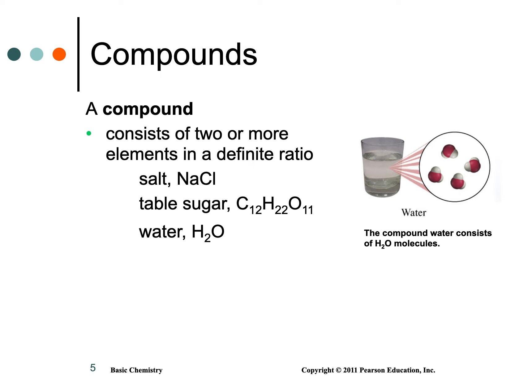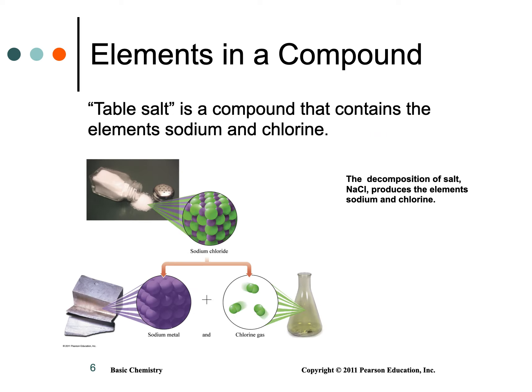Compounds have definite ratios — NaCl is table salt (sodium chloride), sucrose is C12H22O11, water is H2O. Remember that sodium and chlorine are both elements, and when they react to form a compound, they don't retain their original properties. Sodium has its own properties, chlorine has its own properties, but table salt has entirely new properties — it doesn't retain the properties of either element.